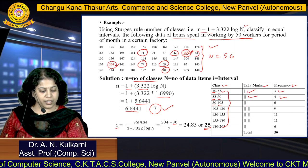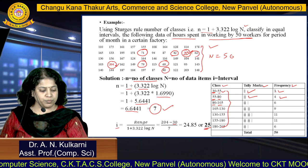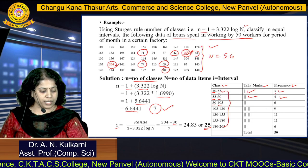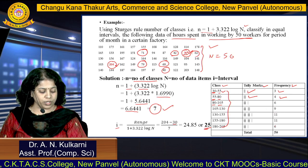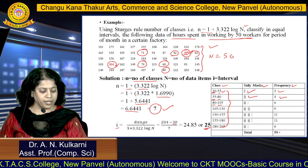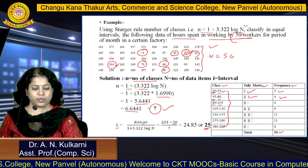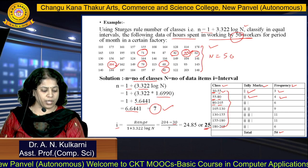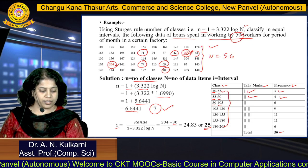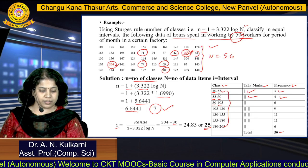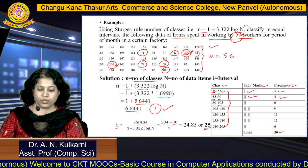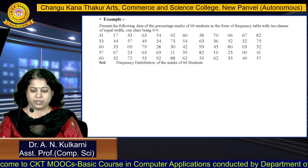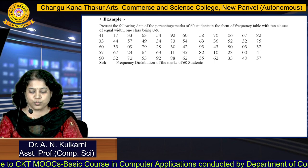Calculate the total of frequency — it equals 50. Your data items also consist of 50 values, so the answer is correct. This is all about the construction of a frequency table for the continuous frequency distribution.